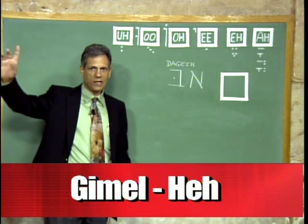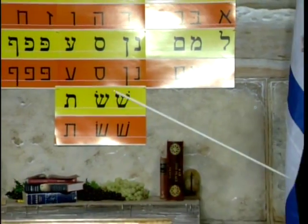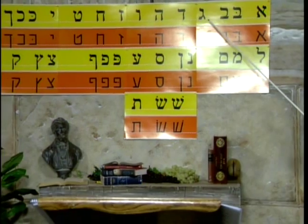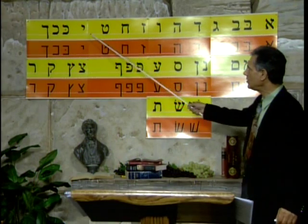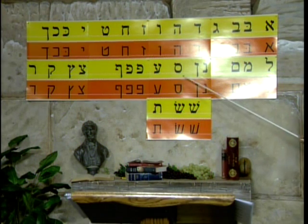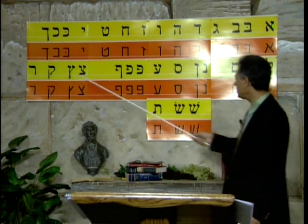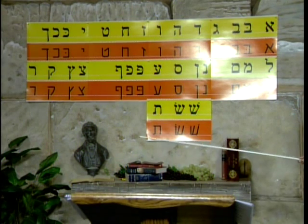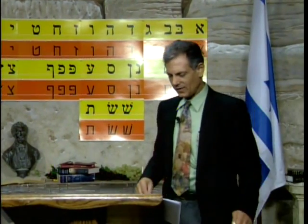Let me introduce you again to the Hebrew letters and look at the string of the Hebrew letters: Aleph, Bet, Gimel, Dalet, He, Vav, Zayin, Chet, Tet, Yud, Kav. And that is the Hebrew alphabet song — we've done it before every time, just to remind you of the Hebrew letters. Here is the Aleph-Bet book which we're using.